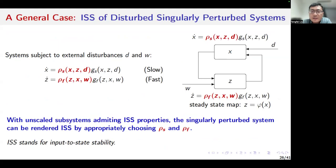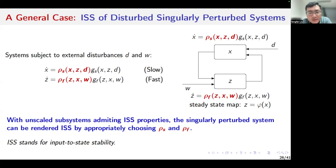When we have to take into account the influence of external disturbances, we have a more general result. With unscaled subsystems admitting ISS properties, the singularly perturbed system can be rendered ISS by appropriately choosing the perturbation functions rhoS and rhoF.